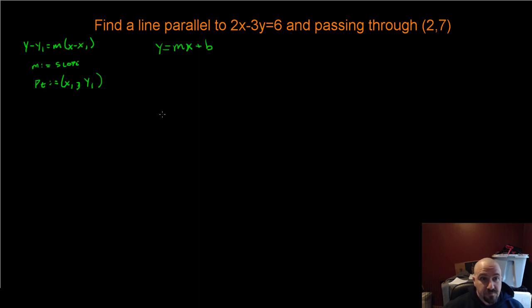Here we go. I'm going to first start it in point-slope form, and then I'm also going to redo the problem in slope-intercept form. The next two that I do will be just in slope-intercept form. Find a line parallel to that. If we want to find a line parallel to it, we need the same slope.